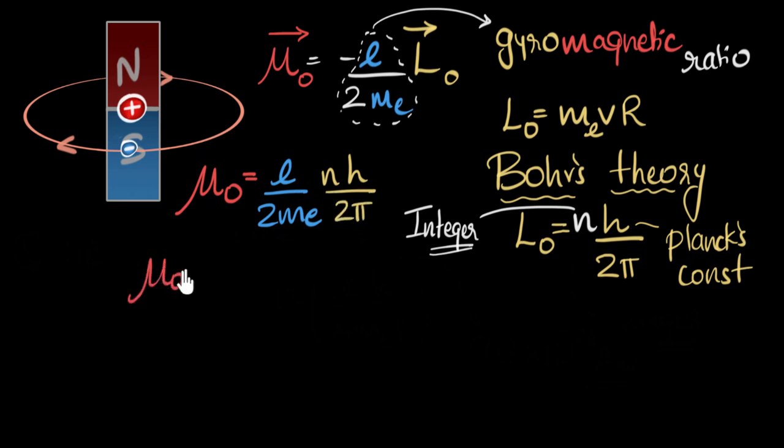And so we put it all together, we get the magnetic moment has to equal, I'll keep that n out, because that's the integer. So it has to be an integral multiple of what? An integral multiple of e times h, divided by 4mₑπ. Let's write that 4mₑ times π.